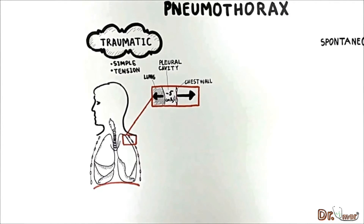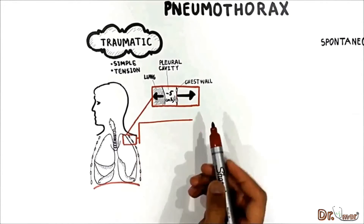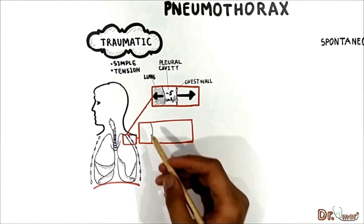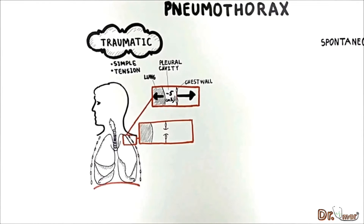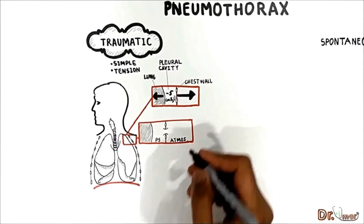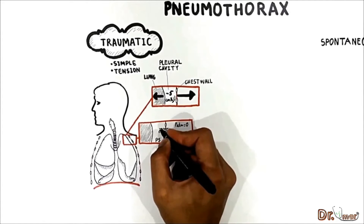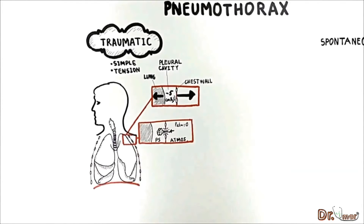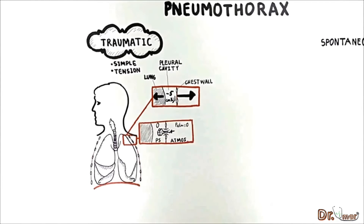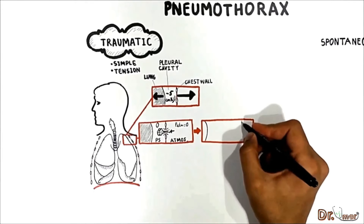If the chest wall is punctured, as in the case of a stab wound, and the pleural space is directly communicated with atmospheric air, because atmospheric pressure is zero, air rushes into the pleural cavity. This makes sense because air moves from a region of higher pressure to a region of lower pressure. Under normal atmospheric conditions, air rushes into the pleural space until the intrapleural pressure equals atmospheric pressure and becomes zero.